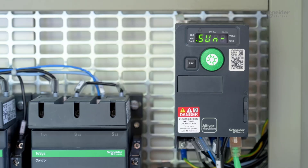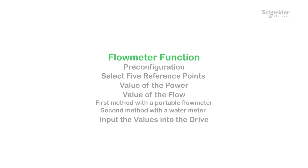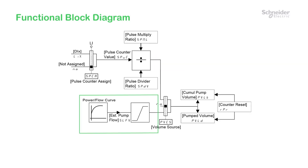Hello, today we're going to guide you through configuring the flow meter function of the Altivar Solar ATV320. The flow estimation function provides an estimation of the flow without the installation of a separate flow meter. The function estimates the flow based on the pump performance curve and drive actual load.